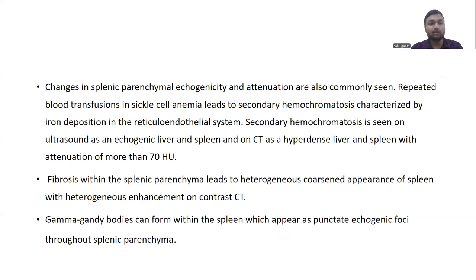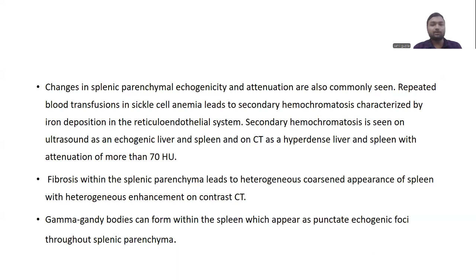Other complications include changes in splenic parenchymal echogenicity and attenuation. Repeated blood transfusions in sickle cell anemia lead to secondary hemochromatosis, characterized by iron deposition in the reticuloendothelial system. This is seen on ultrasound as an echogenic liver and spleen, and on CT as a hyperdense liver and spleen with attenuation of more than 70 HU. There can also be fibrosis within the splenic parenchyma, leading to heterogeneous coarse echotexture, with heterogeneous enhancement on contrast imaging. Gamma-Gandy bodies can form within the spleen, appearing as punctate echogenic foci in the splenic parenchyma.